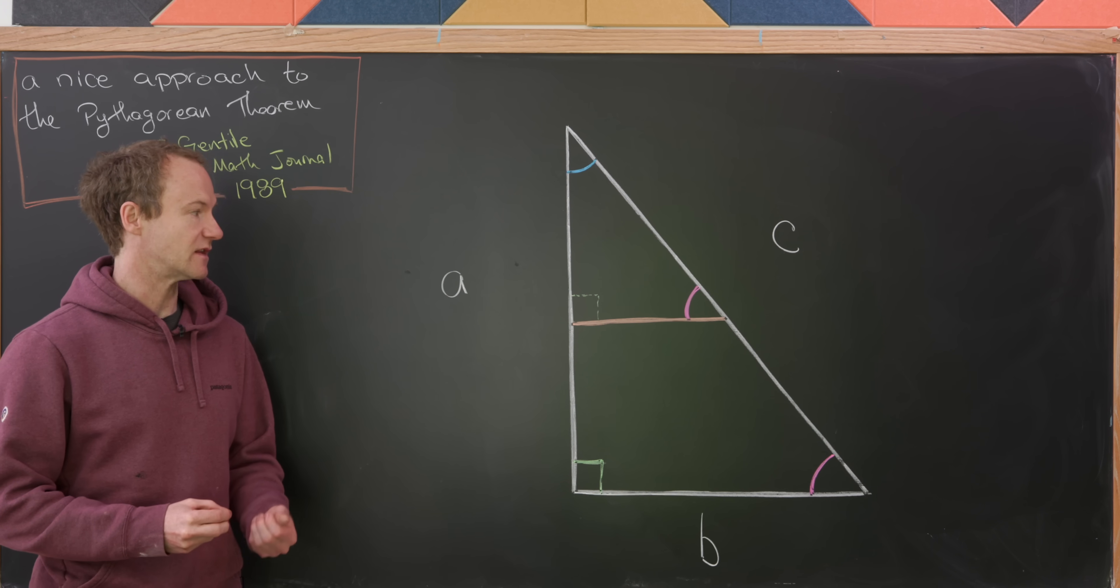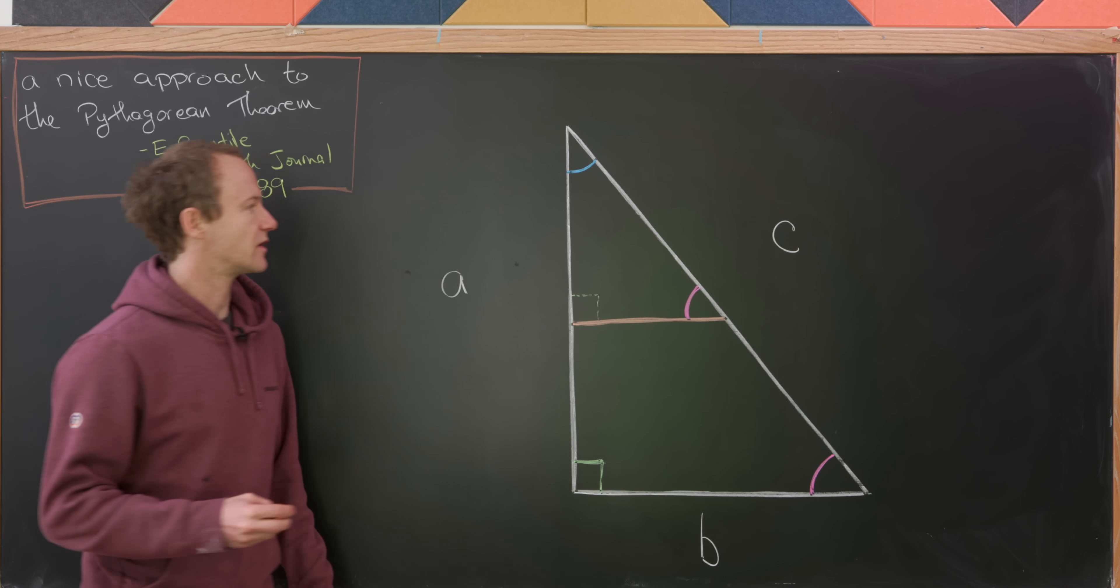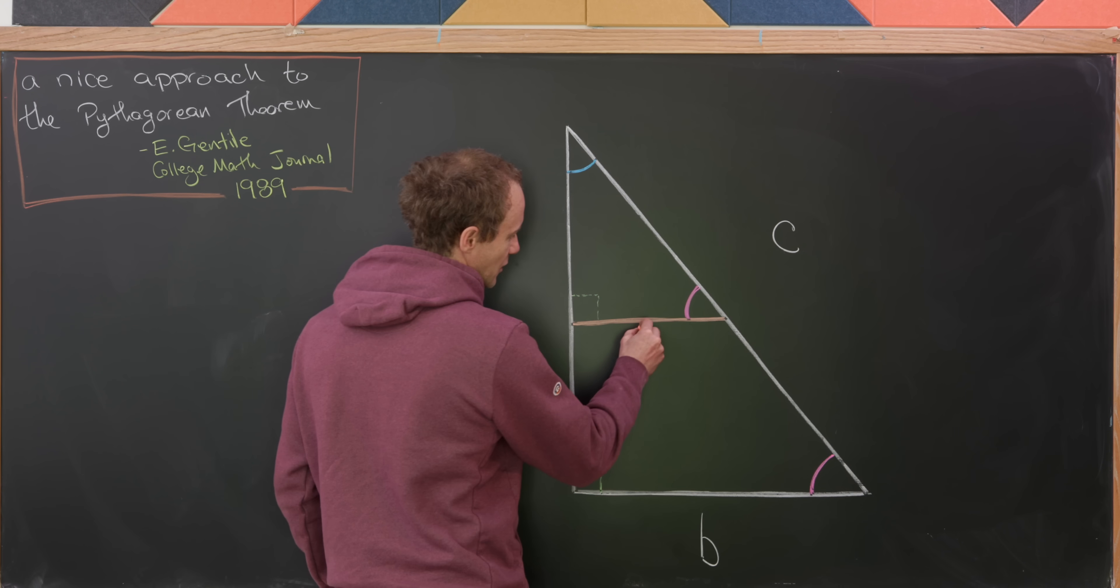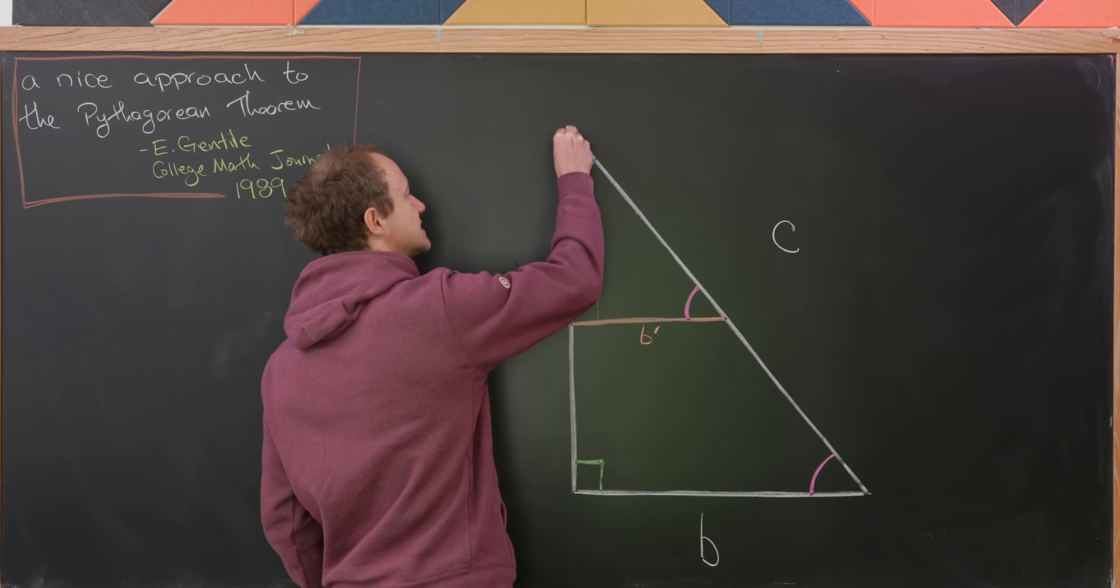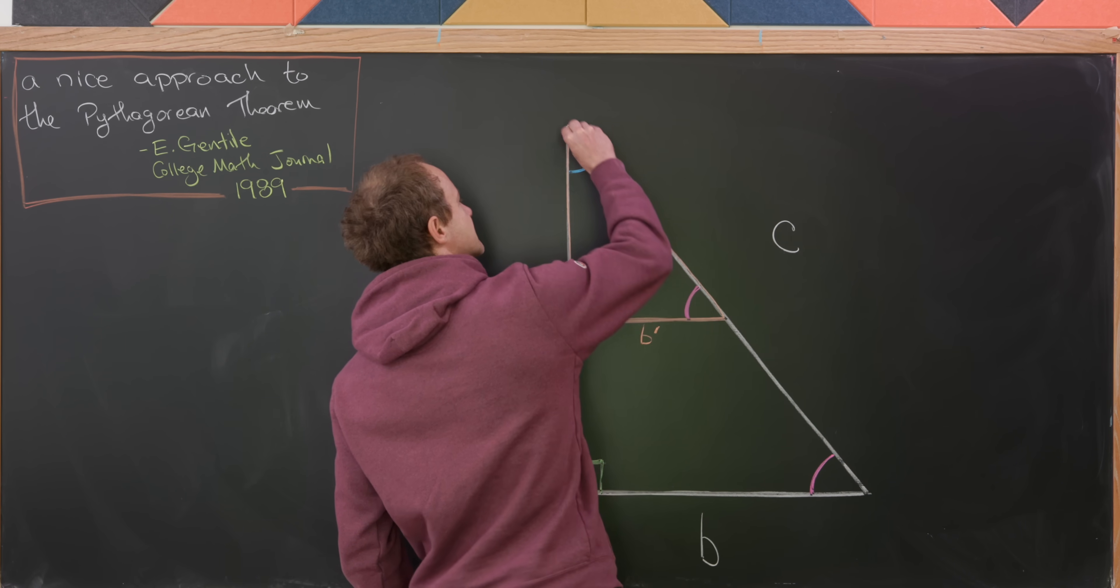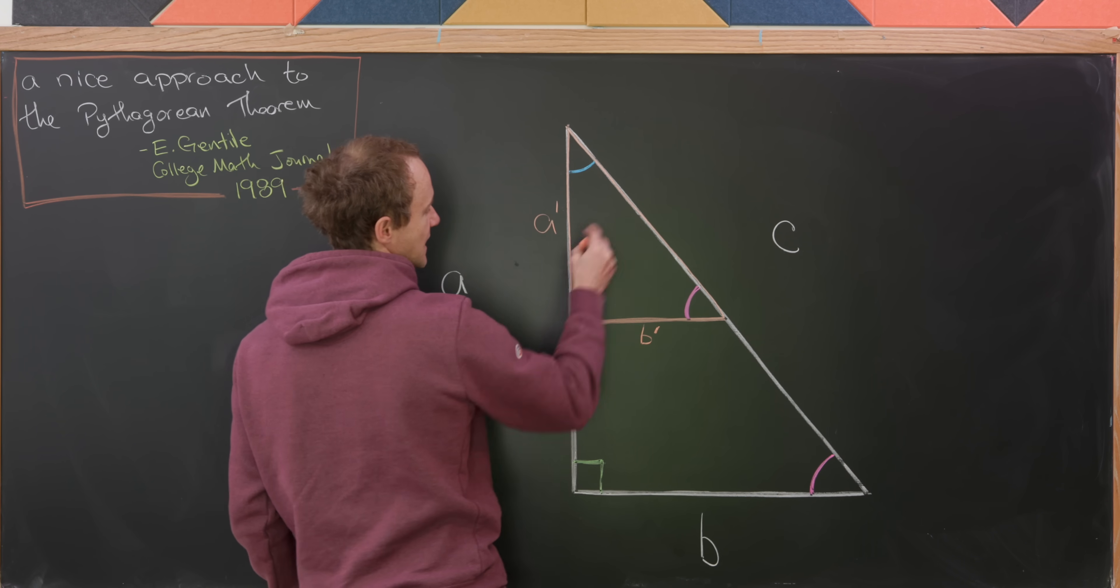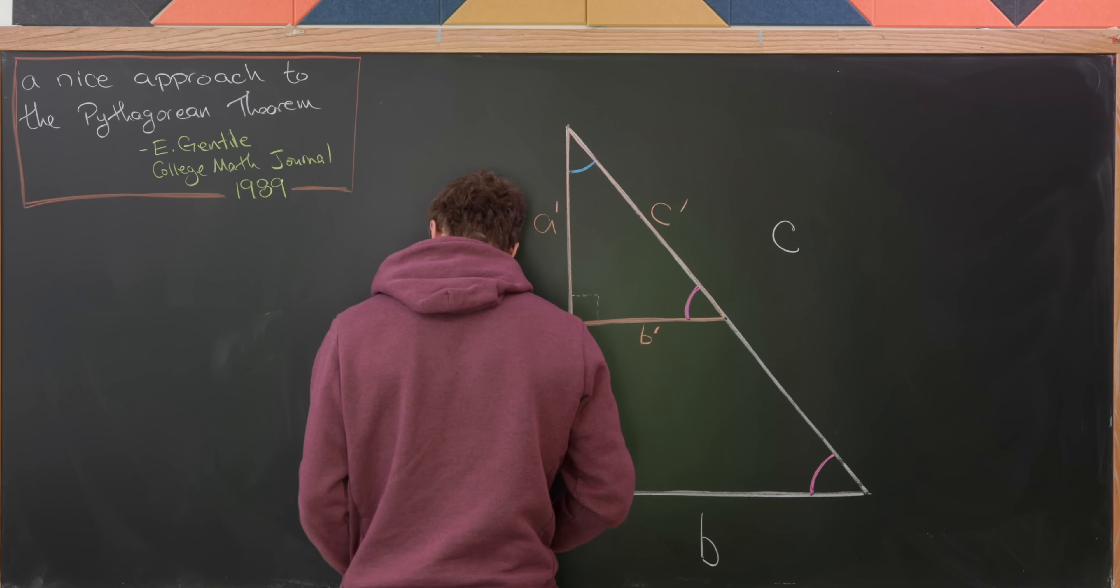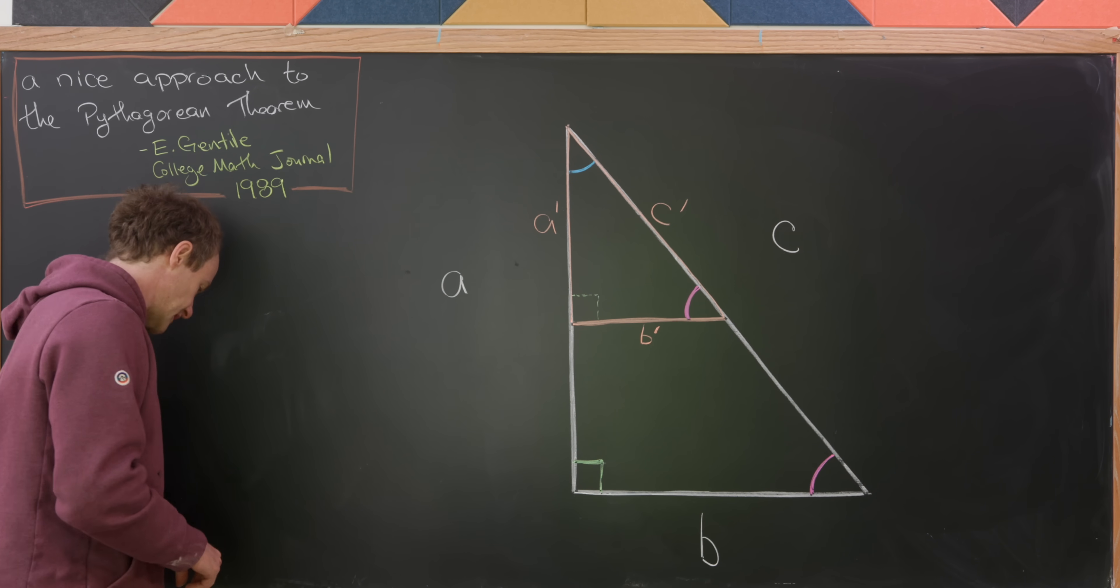Let's put some names to the lengths of the sides of the smaller triangle that we've built. So we'll call this B prime, and then this smaller length here is A prime, and then this smaller length here is C prime.